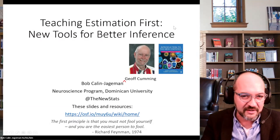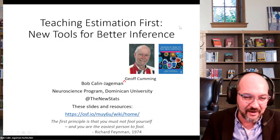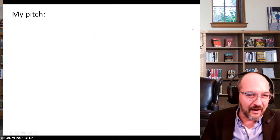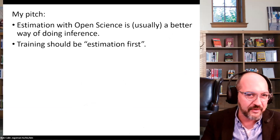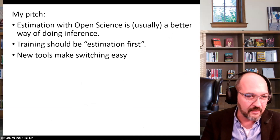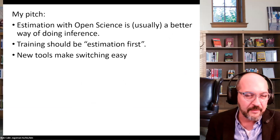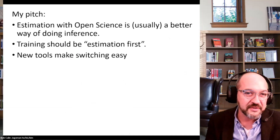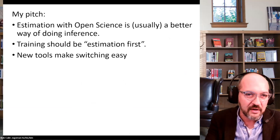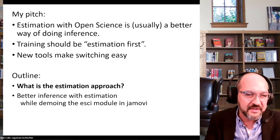I have a polemical presentation — I want to be persuasive. I want to argue that estimation, aligned with open science, is usually a better way of doing inference than the traditional hypothesis testing approach that dominates the social and life sciences. When we train our students, we should be teaching estimation first, making that our primary language, with hypothesis testing as a second language used in specific circumstances.